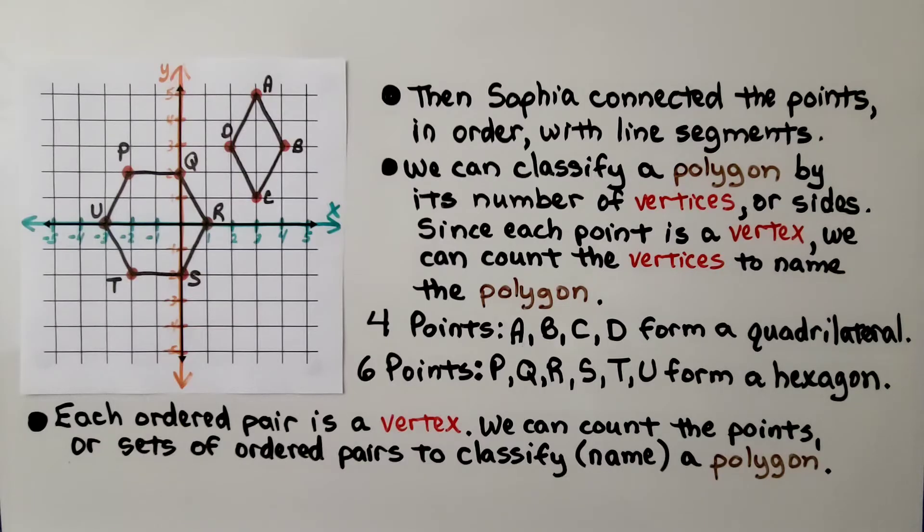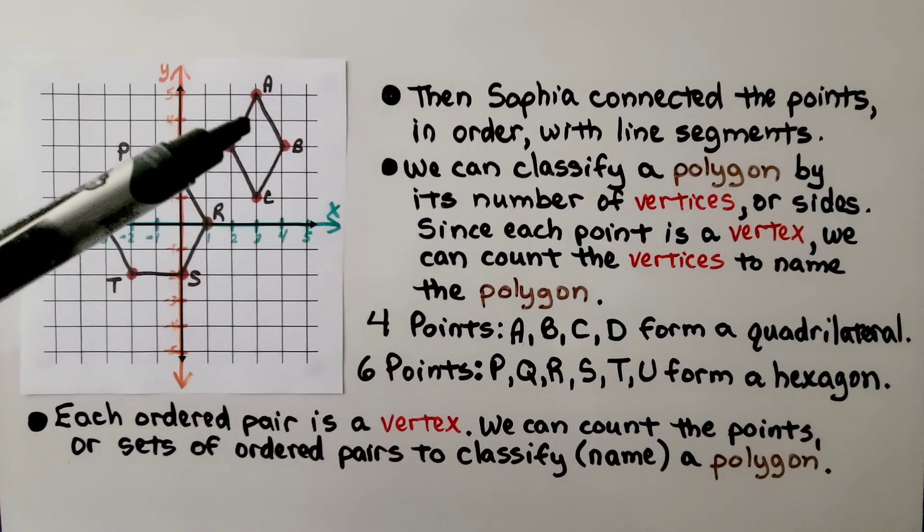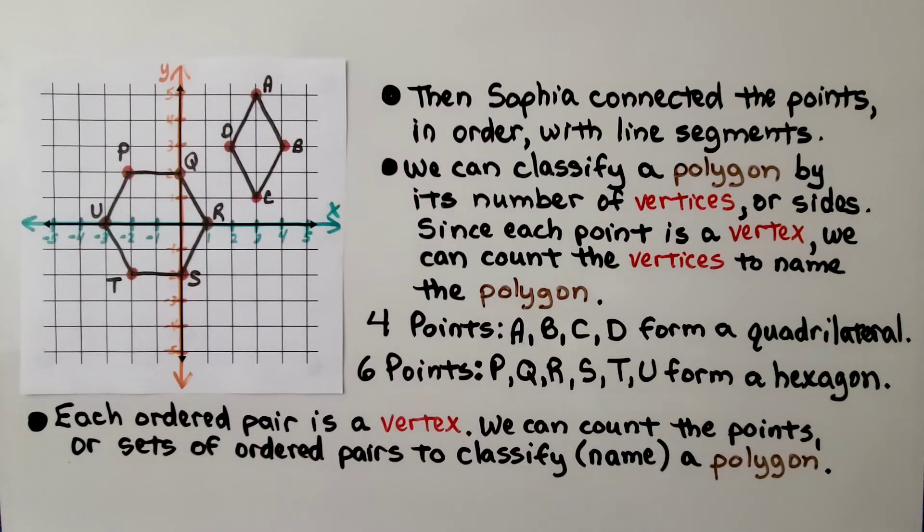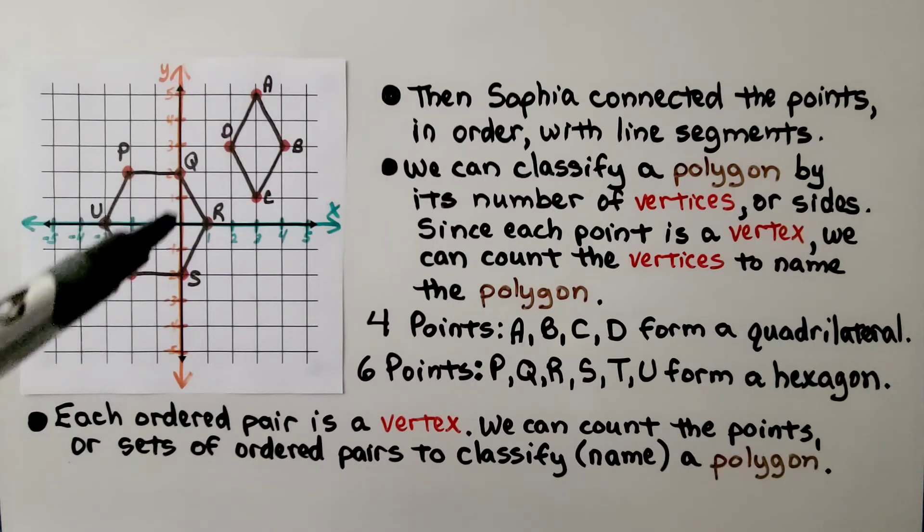And there's 4 points for A, B, C, D, and they form a quadrilateral. And there's 6 points, P, Q, R, S, T, U, that form a hexagon.